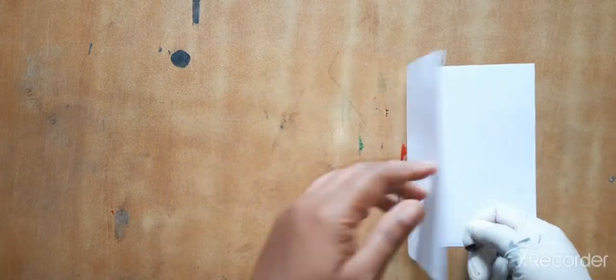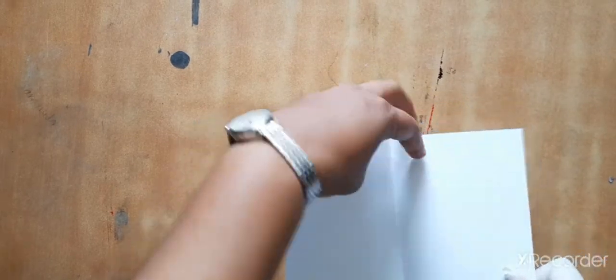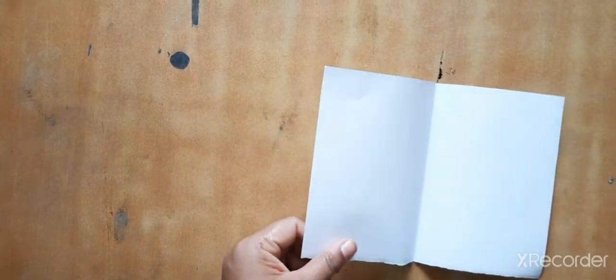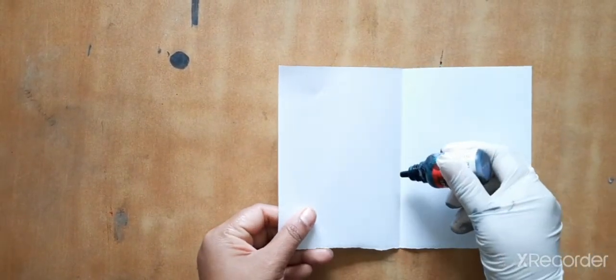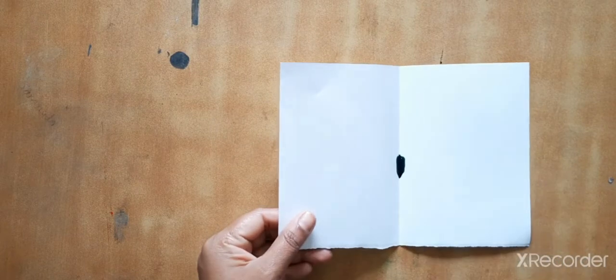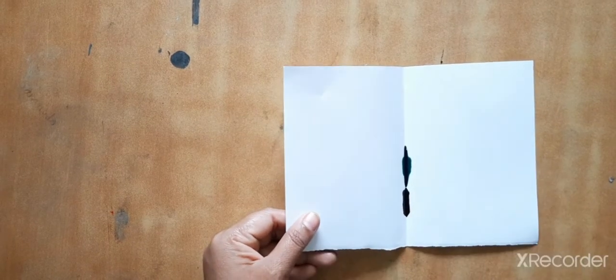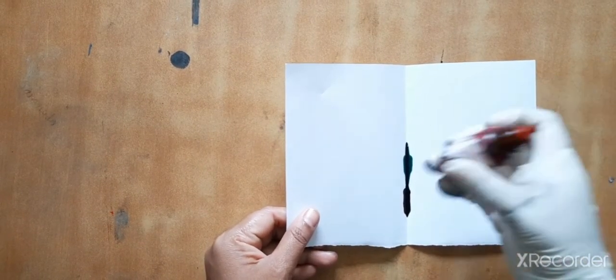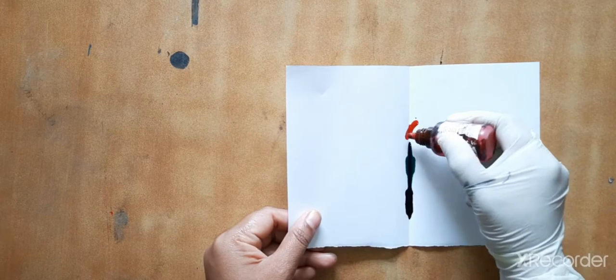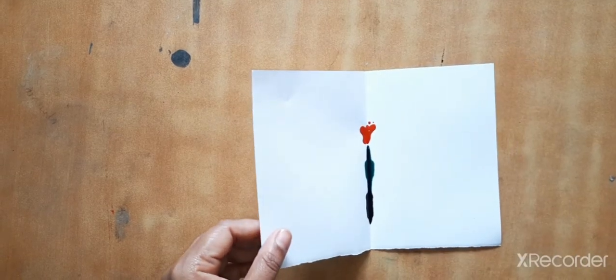The same way, we have to take a paper, fold it into half, and open it. This time I will put green in the middle, black at the bottom, and red in the middle.